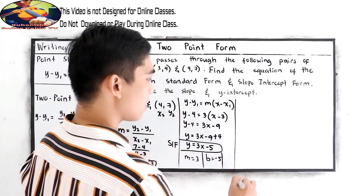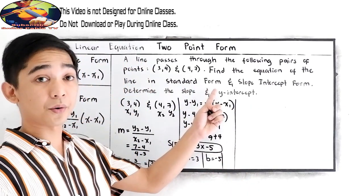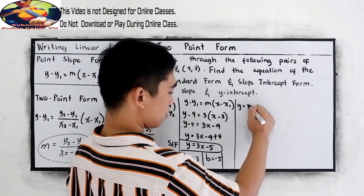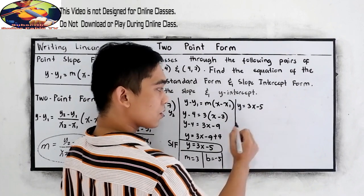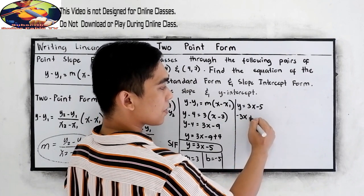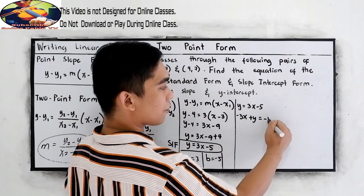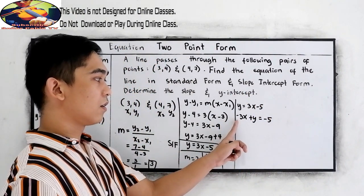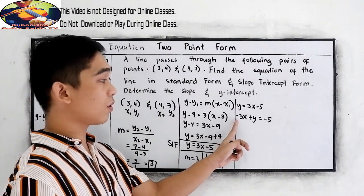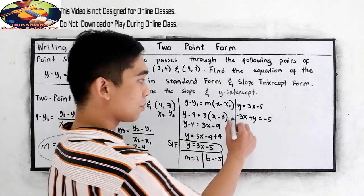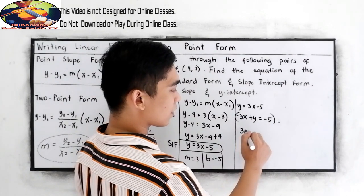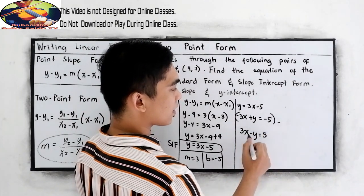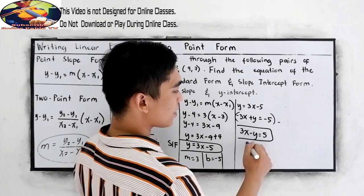Now, let's get the standard form. So, copy: y is equal to 3x minus 5. So, negative 3x plus y is equal to negative 5. Move to the left, it will become negative 3x. So, we need a positive value for a. So, multiply this by negative. So, 3x minus y is equal to positive 5. This will be our standard form.